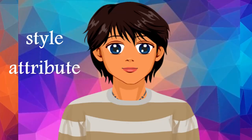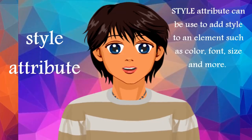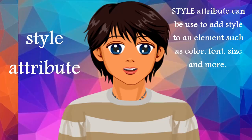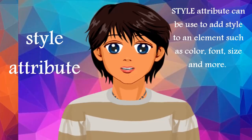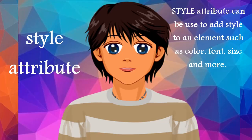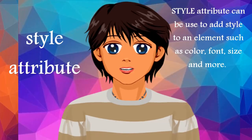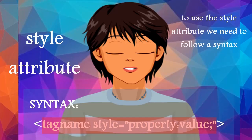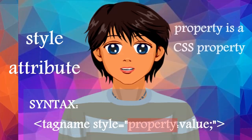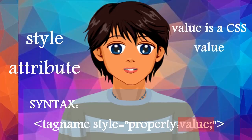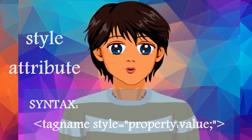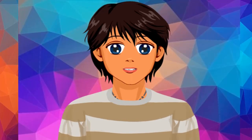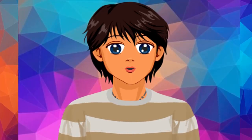HTML Styles. The HTML style attribute is used to add styles to an element, such as color, font, size, and more. To use the style attribute we need to follow this syntax, where the property is a CSS property and the value is a CSS value. We will explain CSS in the second part of this unit.